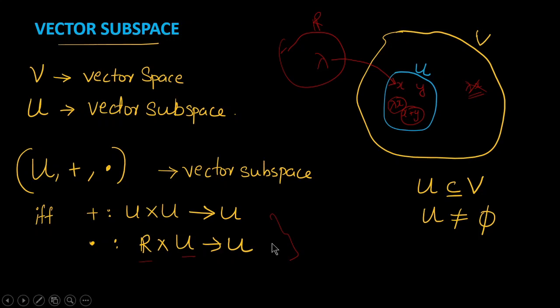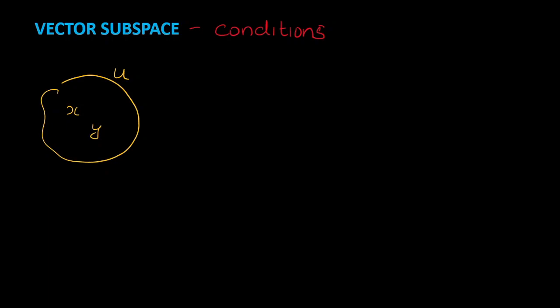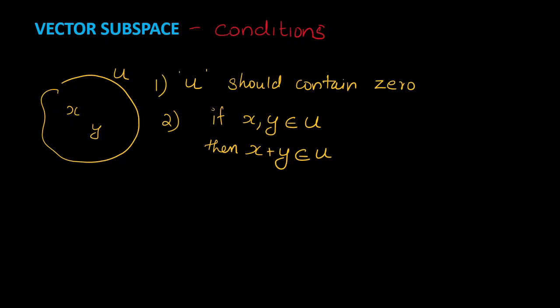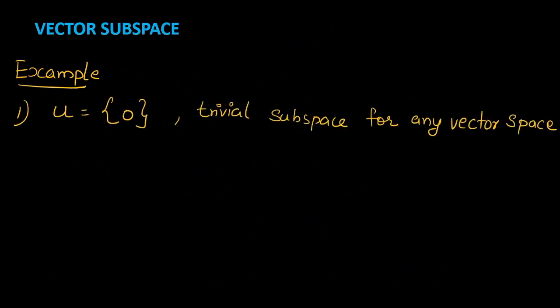We can define these conditions specifically. Suppose U is the subspace and X and Y are elements of U. Then: (1) U should contain 0 — that is one important condition to make a subset a subspace. (2) If X and Y belong to U, then X + Y should also belong to U. (3) If X belongs to U and A belongs to ℝ, then AX should also belong to U. Since U is a subset of V, U has all the properties of V like existence of inverse, neutral element, associativity, etc.